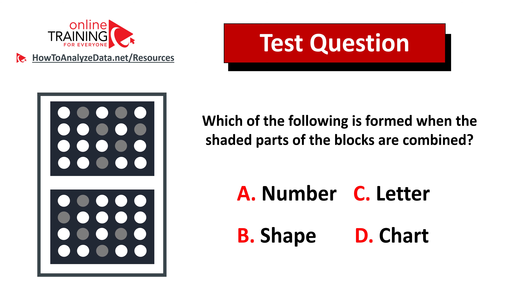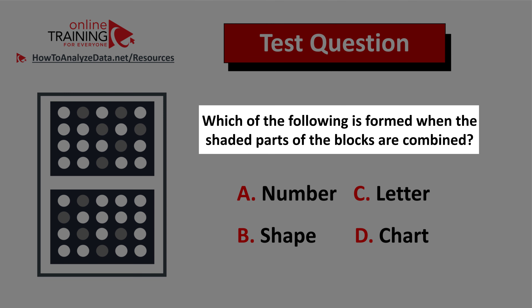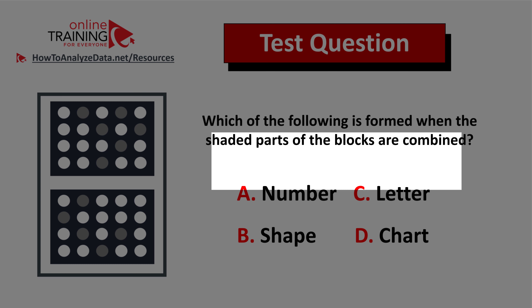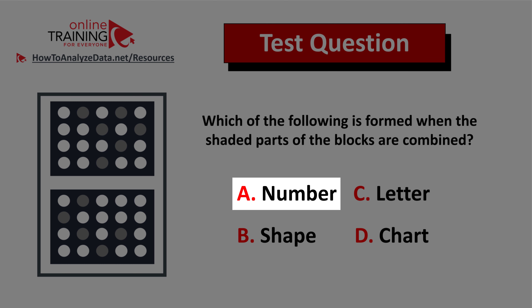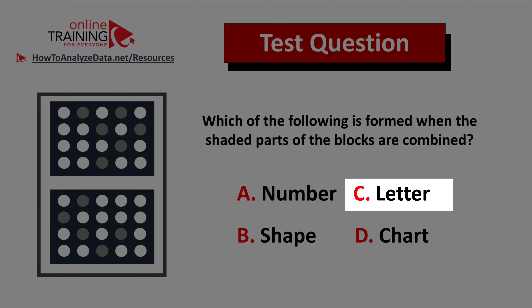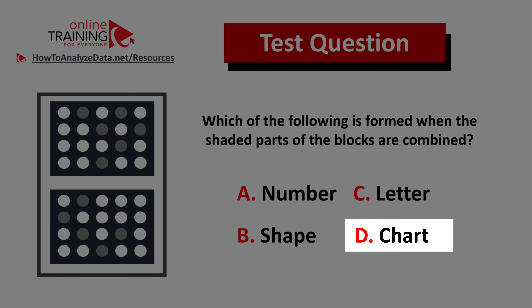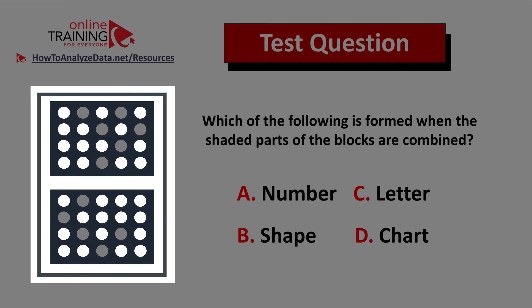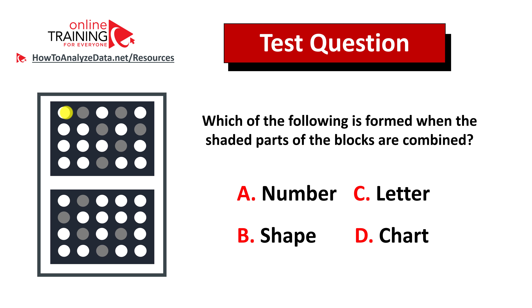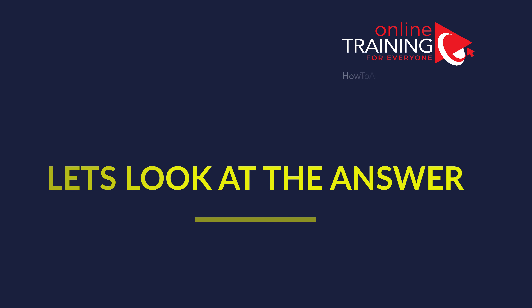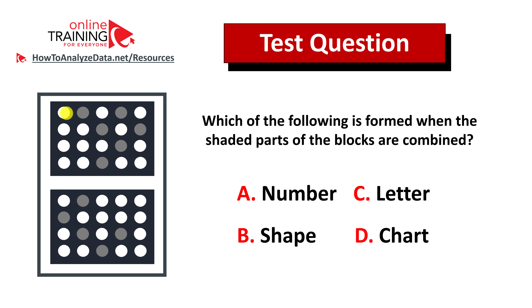Here's another tricky question from the real test: which of the following is formed when the shaded parts of the blocks are combined? You have four choices — choice A number, choice B shape, choice C letter, choice D chart. On the left you're presented with two four by five blocks, each with white and shaded circles. Give yourself 10 to 20 seconds to come up with the solution.